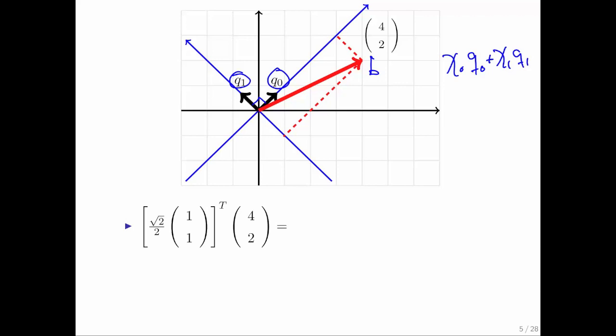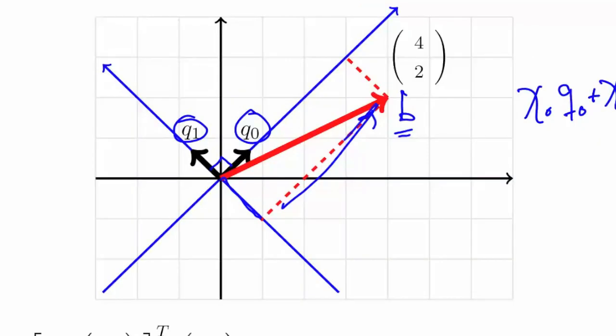We have two mutually orthonormal vectors. Therefore, this plus that is equal to b. Notice that this is just the same as that vector right there. Therefore, to come up with that vector, all we have to do is take the orthogonal projection of the vector b onto the span of q0.